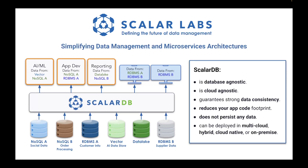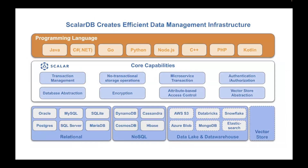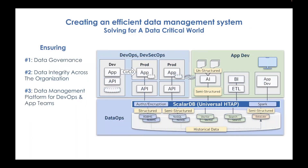This gives your application development teams a single source from where they could access any data set that they need, and it keeps all the data sets consistent. As the footprint of data increases in your organization, it becomes critical to have data governance, data integrity across the entire organization, and a data management platform for DevOps and app teams to use seamlessly.